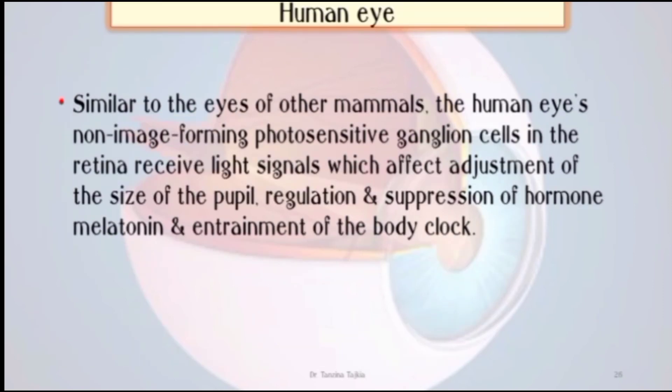Similar to the eyes of other mammals, the human eye has non-image-forming photosensitive ganglion cells in the retina that receive light signals which affect adjustment of the size of the pupil, regulation and suppression of the hormone melatonin, and entrainment of the body clock.